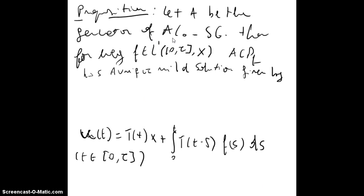So in the same way, we have a proposition that says that if A is a generator of a C0 semigroup, then for every f in L1(0,τ;X), we have a unique mild solution given by this formula, sometimes called the variation of constants formula for the solution. So it's the same for the non-homogeneous case.